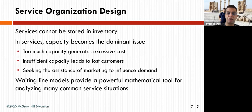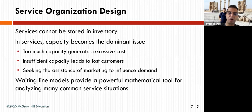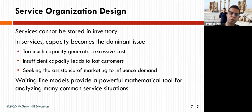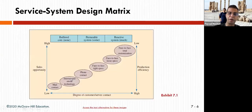So, seeking the assistance of marketing to influence demand is important. Marketing can influence the services required. Also, waiting line models provide a powerful mathematical tool for analyzing many common service situations. There is a whole area about waiting in line that is very scientifically driven and can help you manage your delivery of services.